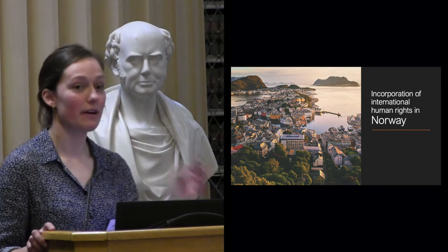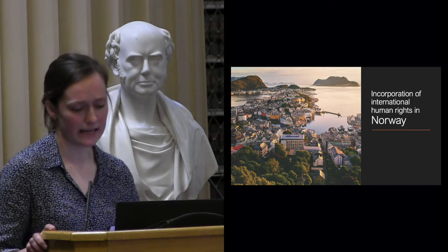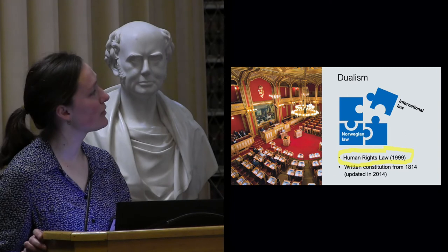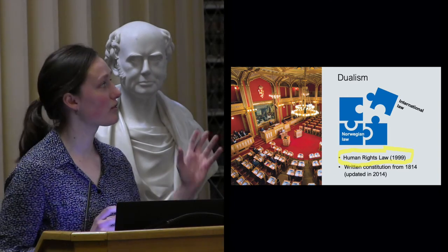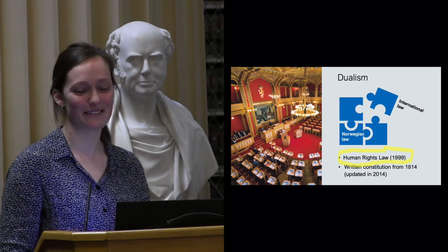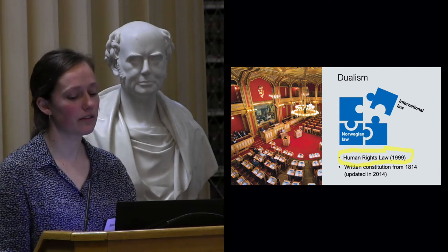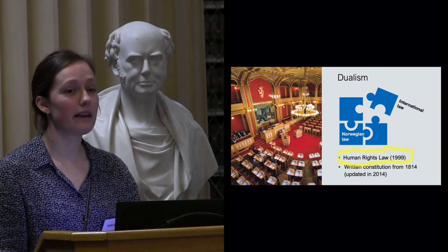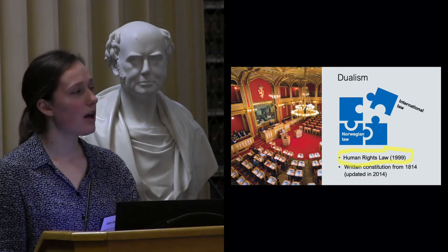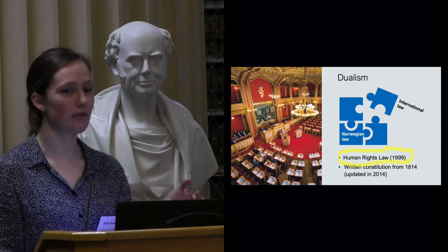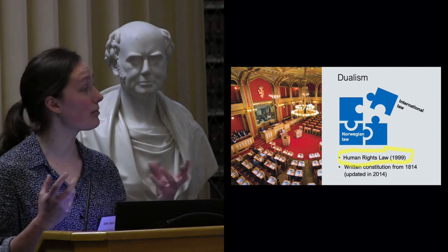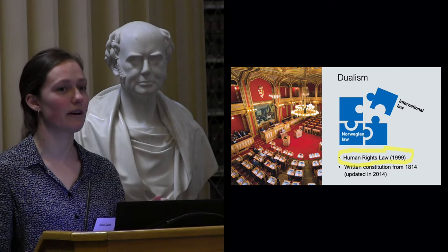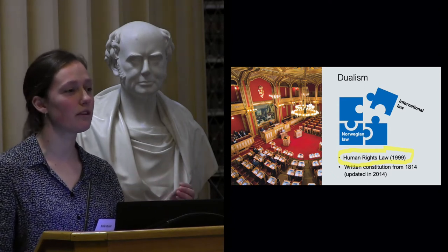The second country is Norway, which has a lot in common with Iceland. Norway is another dualist country, meaning that international law must be incorporated to give it legal effect. There are two sources of human rights law in Norway: first, the Human Rights Law from 1999, and second, the written constitution from 1814, which was amended in 2014 to include a chapter on human rights. Following that 2014 update, everyone was excited about an article saying Norway had to comply with all of its international human rights obligations — people thought this was incorporation of all human rights treaties ratified by Norway.